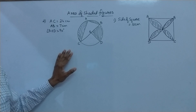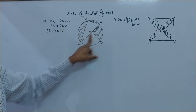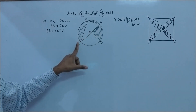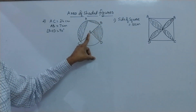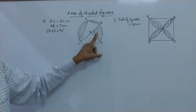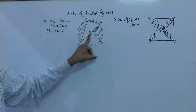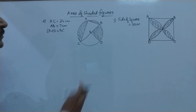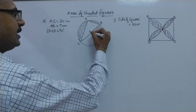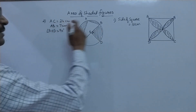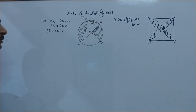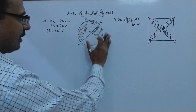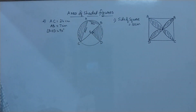In the second question we have a circle where BOC is the diameter. We have taken a point A on this semicircle and joined it with C and B. Then we have radius OD which is perpendicular to OB, so angle BOD is 90 degrees — I'll mark it in the figure. We are given AC = 24 and AB = 7 centimeters, and we need to find the area of the shaded portion.